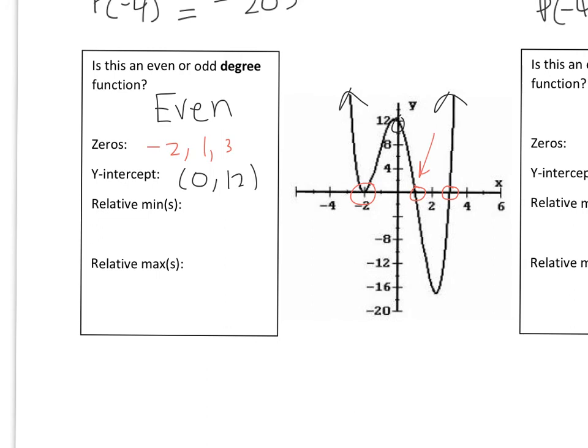The relative min — on this graph there are actually two low points relative to the area around them. The relative min is at negative 2, 0 and at 2, negative 10. You should also be able to find that on your calculator; there are calculator tutorials if you need them. The relative max looks like roughly 0, 12 but it actually looks like it shifted to the left a bit.